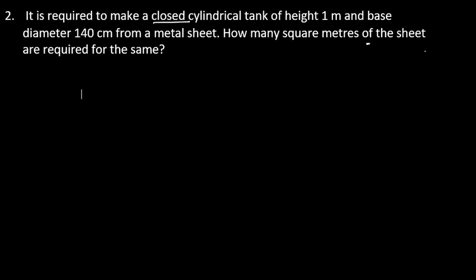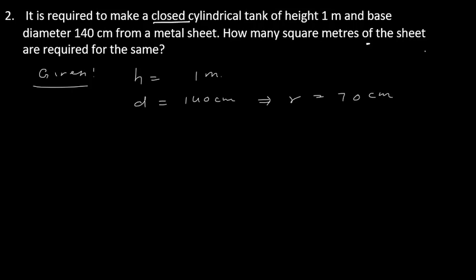Second question: It is required to make a closed cylindrical tank of height 1 meter and base diameter 140 centimeters from a metal sheet. How many square meters of sheet are required? Since it is a closed tank, we need to find the total surface area. Given: height = 1 meter, base diameter = 140 centimeters, so radius = 70 cm = 0.7 meter. We convert everything to meters since the answer is needed in meter square.